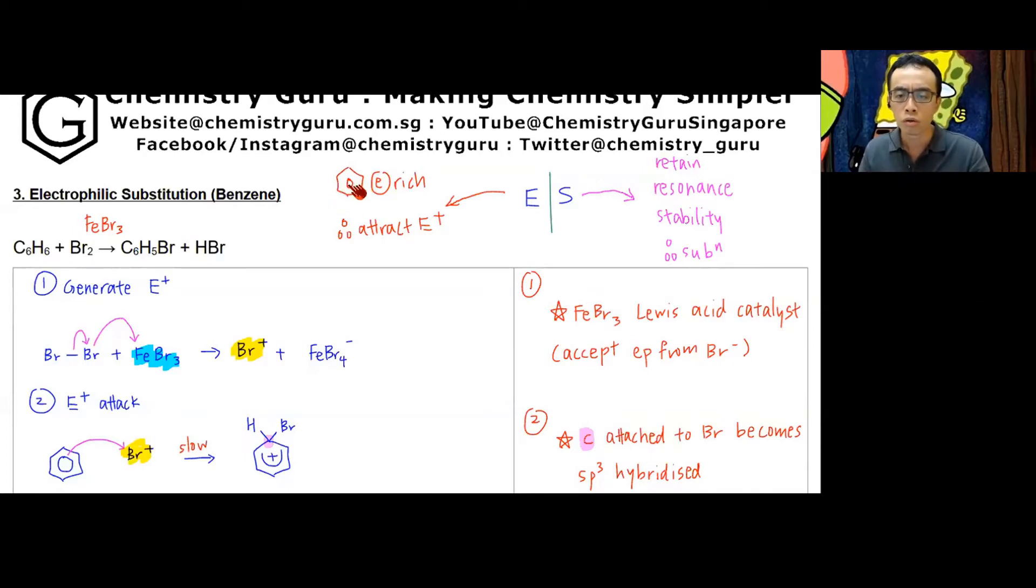Benzene, as much as possible, will want to keep this resonance stability. It doesn't like to lose it. If it undergoes addition and becomes saturated, it doesn't have this delocalized pi system—the resonance is gone.